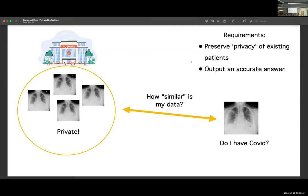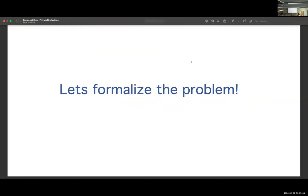Of course, there are two natural requirements. First, we want to preserve some notion of privacy with respect to these prior patients. We don't want to post their information on Facebook or Twitter. But also, we want an accurate answer. We actually want to know if we are very similar to this set of patients that have COVID.